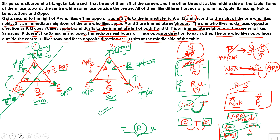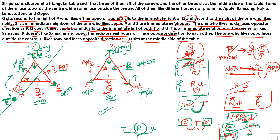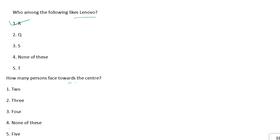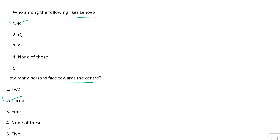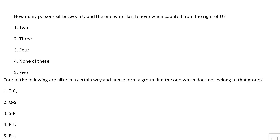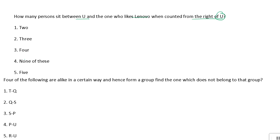Let's answer the questions. Who among the following likes Lenovo? Lenovo is the only phone left and R is the only person without a phone — so R likes Lenovo. Option one is your answer. How many persons face towards the center? Counting: one, two, three — three persons face the center. So the answer is option 2, which is 3. How many persons are between U and the one who likes Lenovo when counted from the right of U? U is here and Lenovo is R. Counting from U's right: 1, 2, 3, 4 — four persons are between them. Option 3, answer is 4.